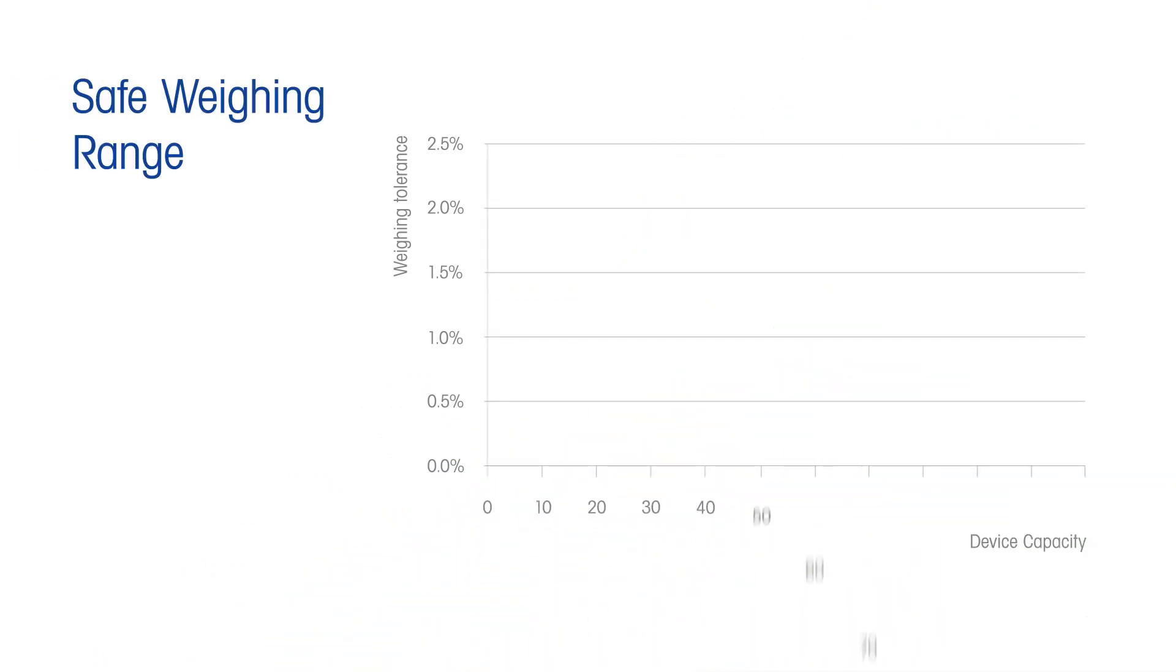Let's make an example using this safe weighing range graph. The capacity of this device is 4 kilograms. The smallest net sample to be weighed is 30 grams. Please note that wherever measurements take place, there can be an error. We can express this error in a relative measurement uncertainty curve.